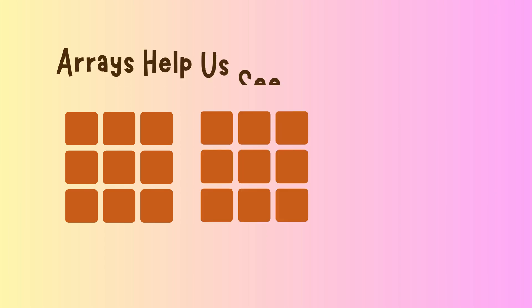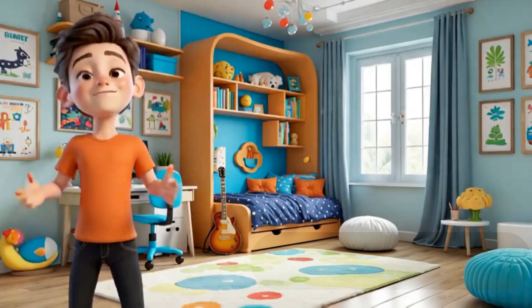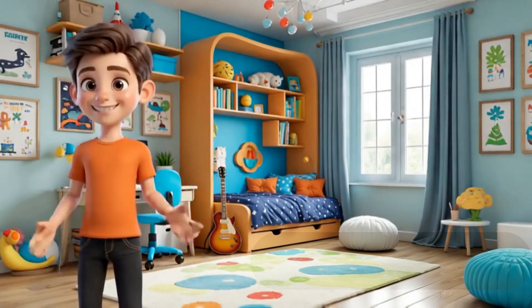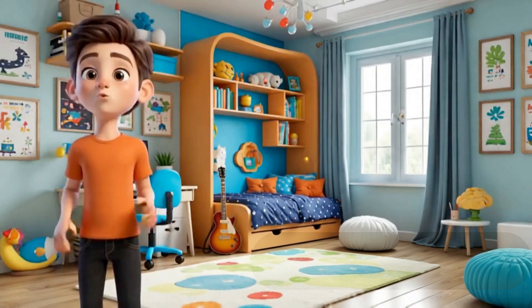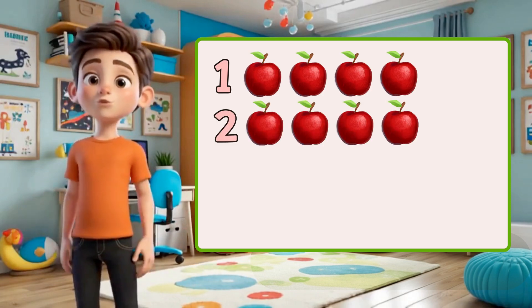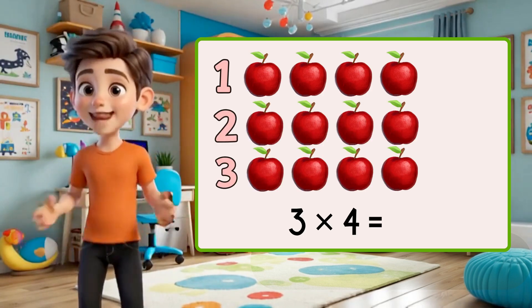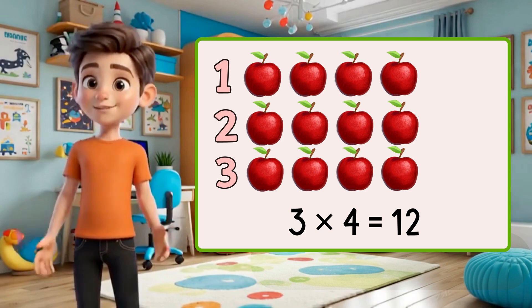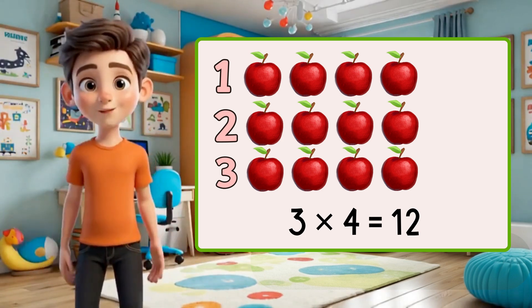Arrays help us see multiplication. Sometimes we can draw an array to understand multiplication — that means we line up objects in rows and columns. For example, if there are three rows with four apples each, that's three times four equals twelve. Arrays help you see multiplication instead of just memorizing.